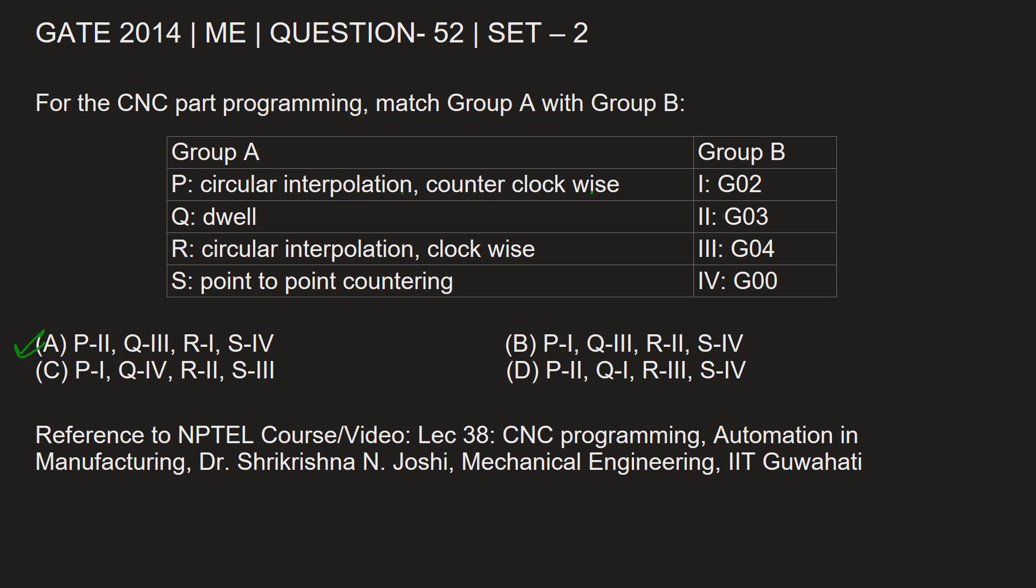P, being circular interpolation counterclockwise, is G03. R has clockwise, it's G02, that is 1. Q is third, which is G04. And S, point to point counting, is fourth, that is G00. So A is correct.